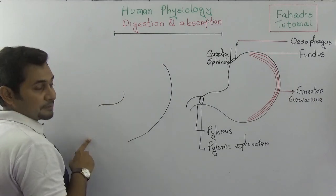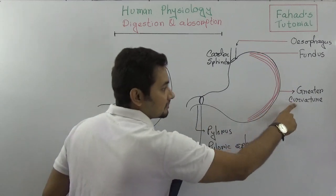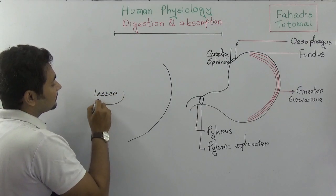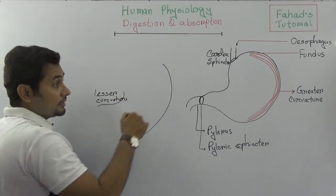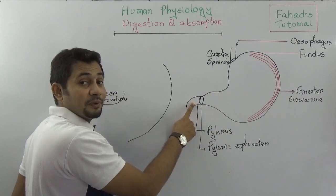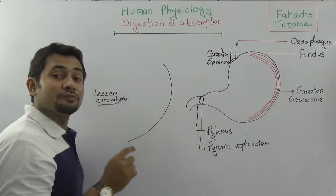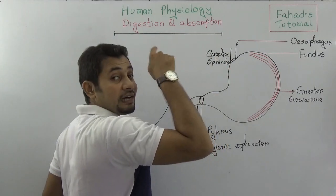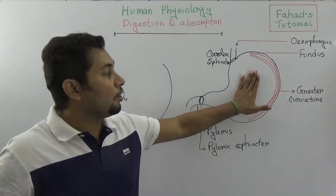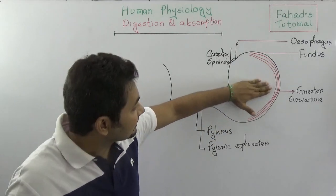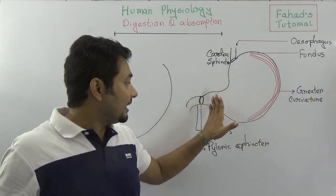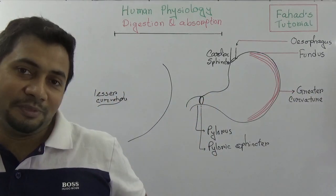The stomach has two curvatures: the outermost one is called the greater curvature, and the smaller inner one is called the lesser curvature. The part adjacent to the duodenum is called the pylorus, with the pyloric sphincter. The upper part connected to the esophagus is called the cardia, and the hollow middle part is called the fundus or body of the stomach.